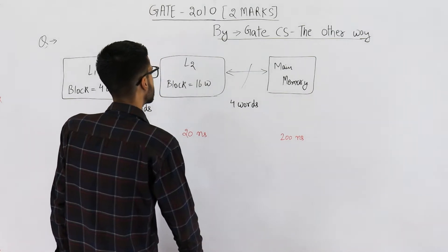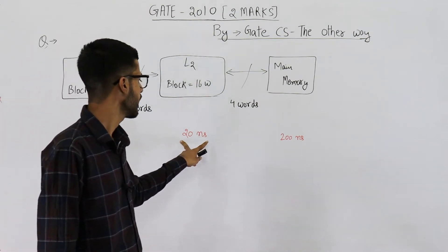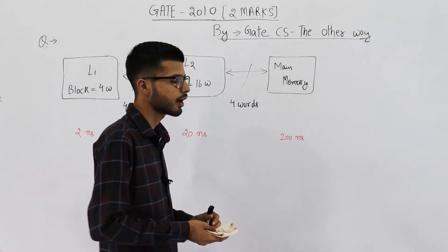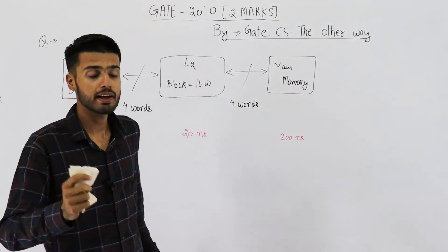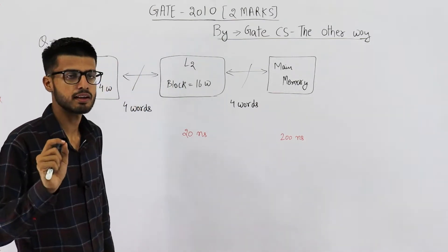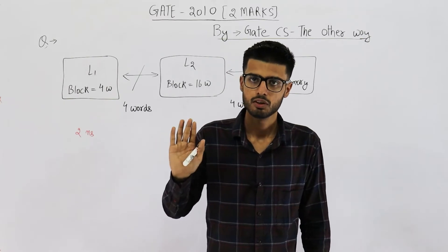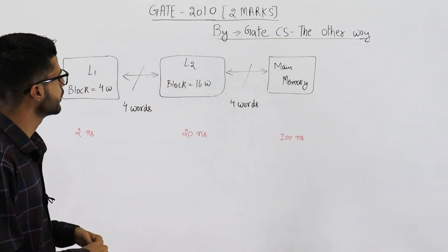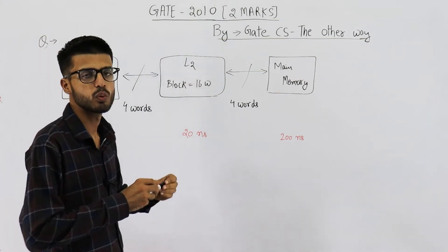So they are saying that in this configuration, if L1 cache has an access time of 2 nanoseconds, L2 has an access time of 20 nanoseconds, and main memory has an access time of 200 nanoseconds — how much time is required for transferring one block from L2 to L1? Now, we are not actually required to supply that word to the CPU; we are only required to find the time taken for transferring. Nothing is given about hit rate or miss rate. You just calculate the time taken to transfer a block from L2 cache to L1 cache. So the confusion here is: block size is 4 words in L1 and 16 words in L2. Which one to consider?